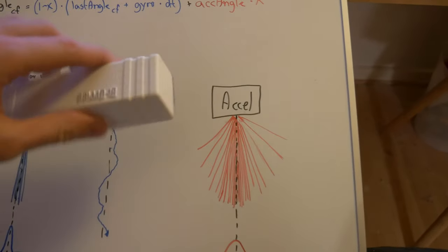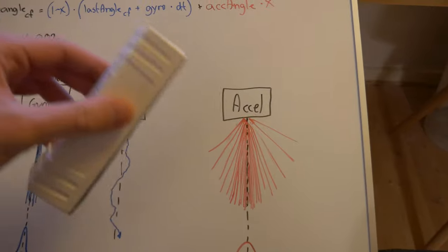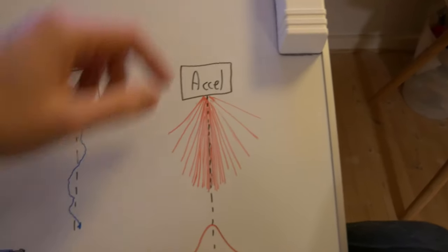then generally, if you measure the gravity vector, it's going to have a lot of noise because you have a lot of noisy movements.